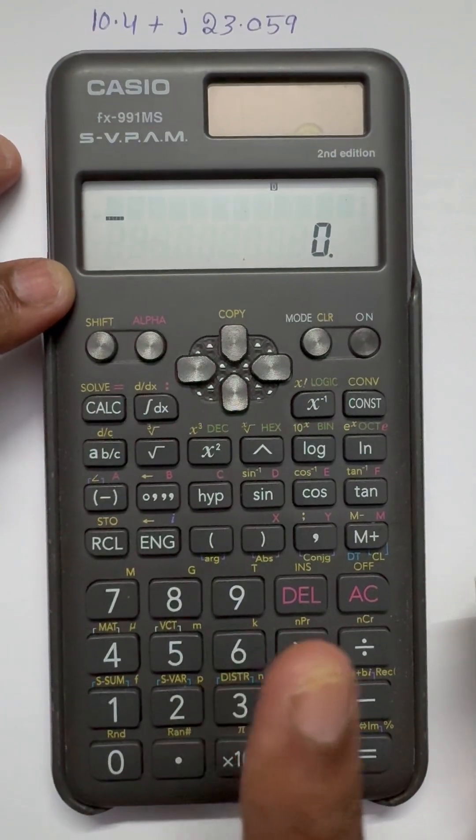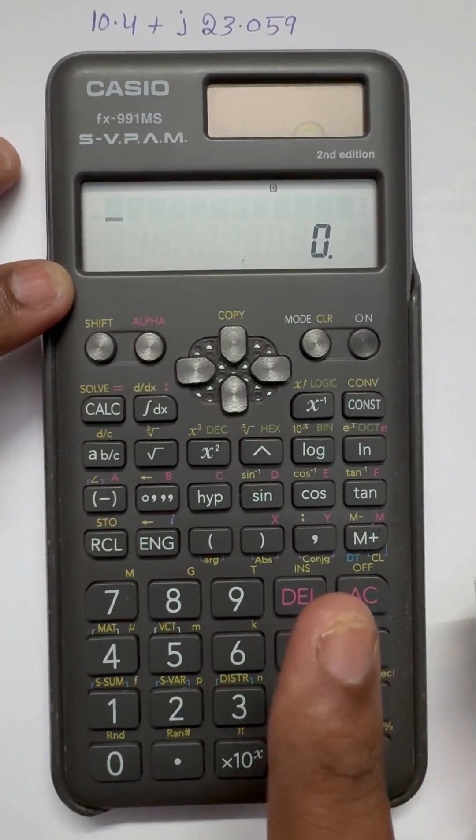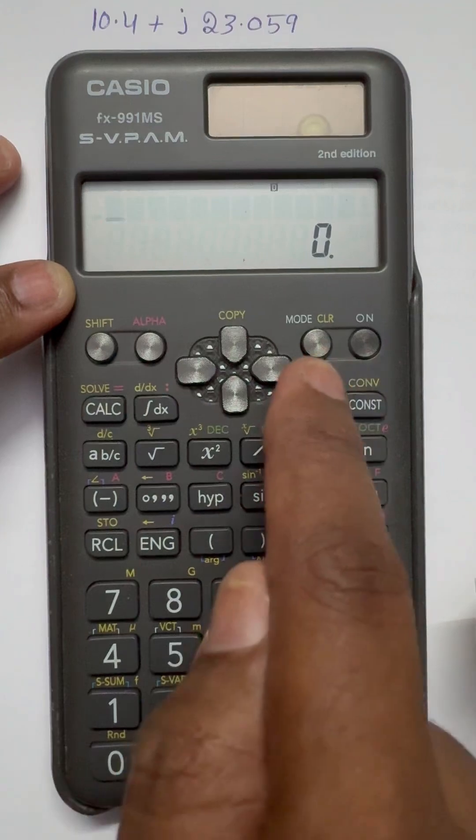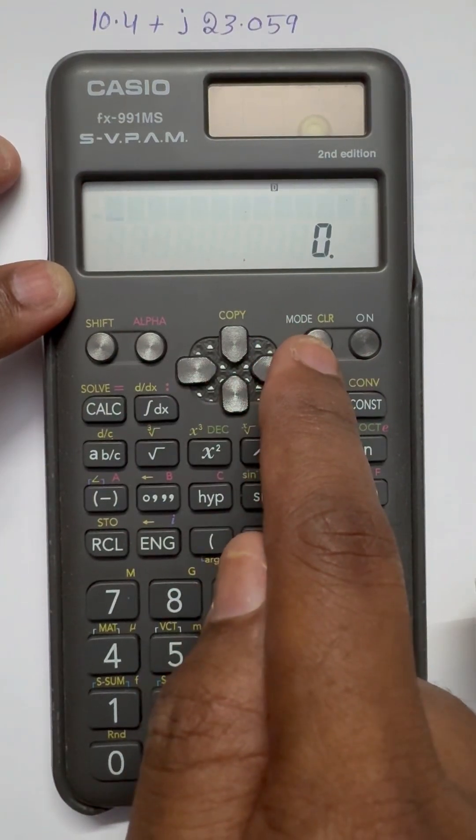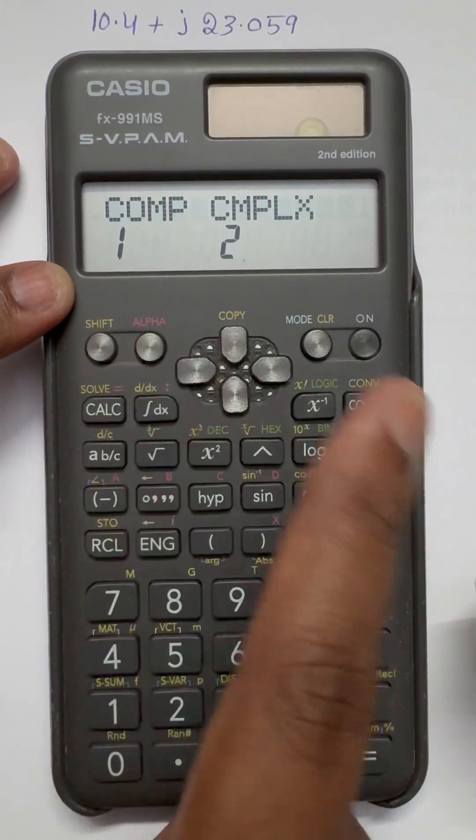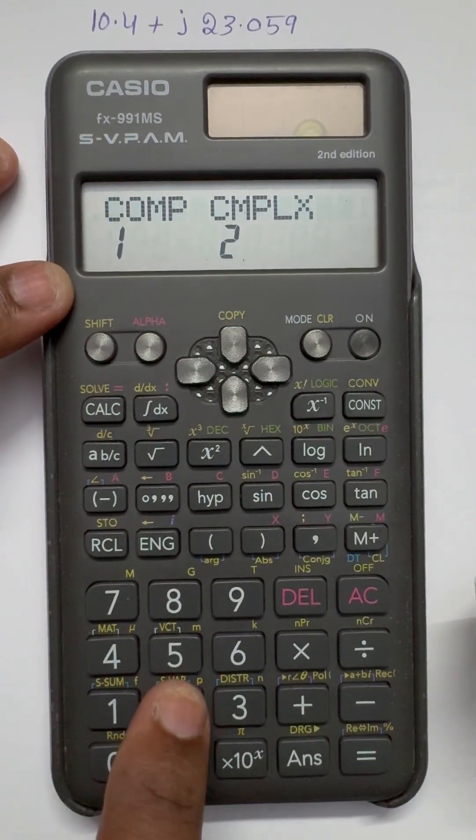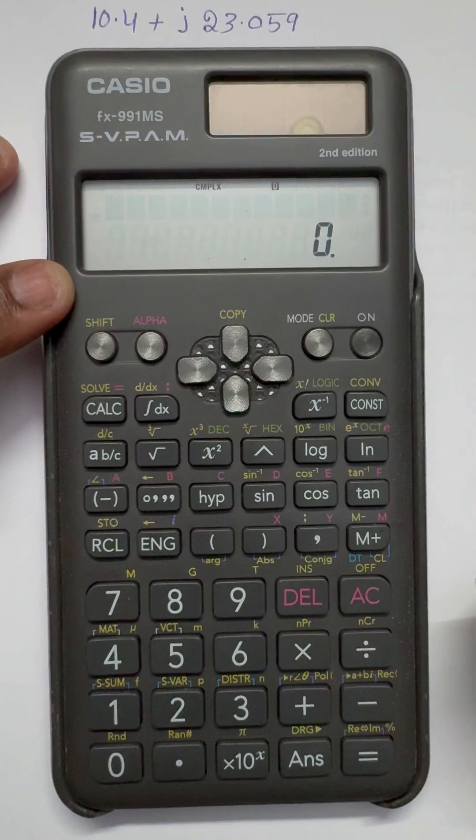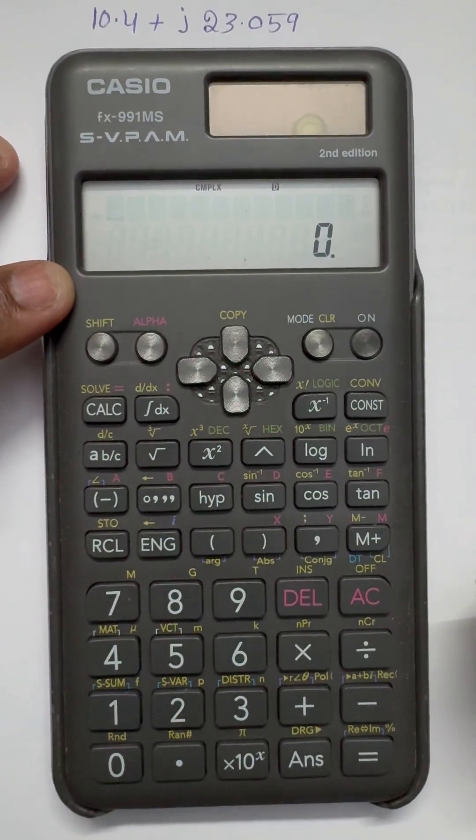Now we have to place our calculator into complex mode. For that, press this mode button. Press mode here. Now, one and two we need complex, so press two.